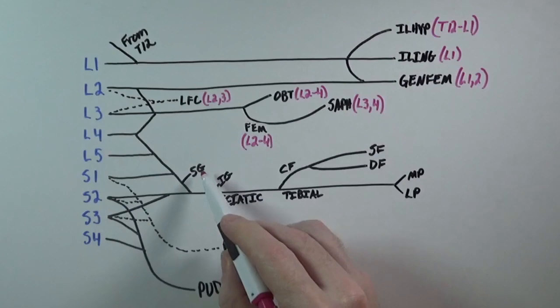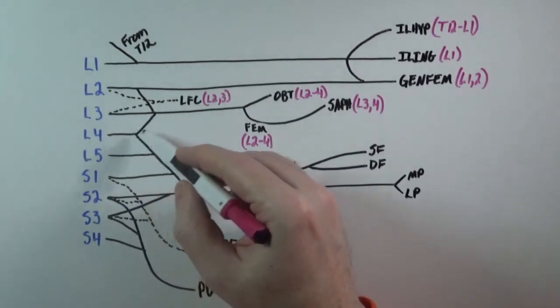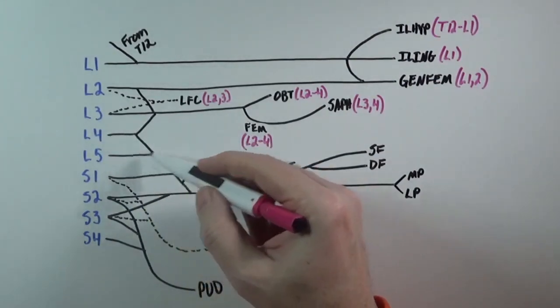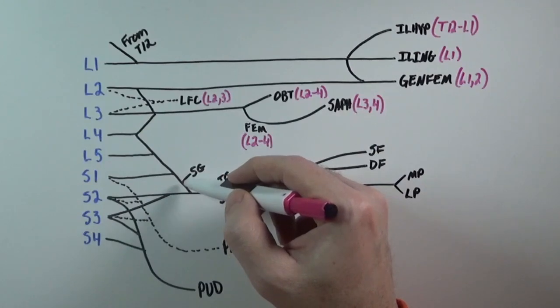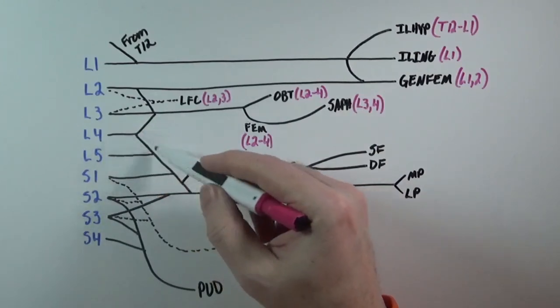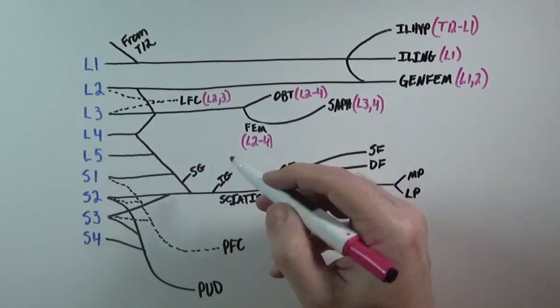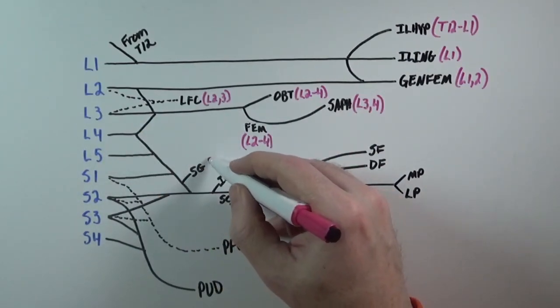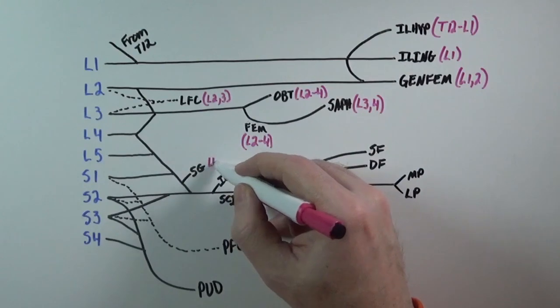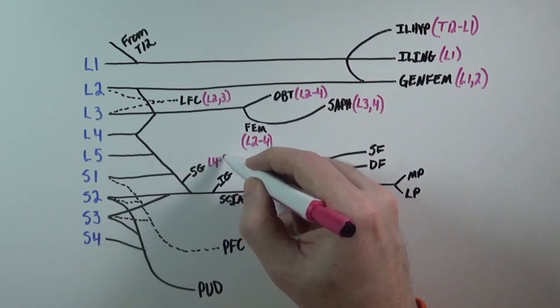Down here, the superior gluteal nerve comes from L4, L5, and S1. We draw the slopes to indicate the direction the fibers are running toward the nerve that they're creating.